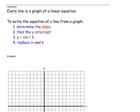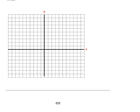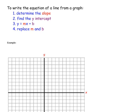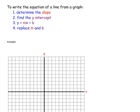Please turn to the summary page. Every line is a graph of a linear equation. To write the equation of a line from a graph, you will determine the slope, then find the y-intercept. Write the equation in slope-intercept form, y equals mx plus b, and then replace m and b with their values. Let's do one more example. Make sure that you pause the video and copy that into your notes, please.